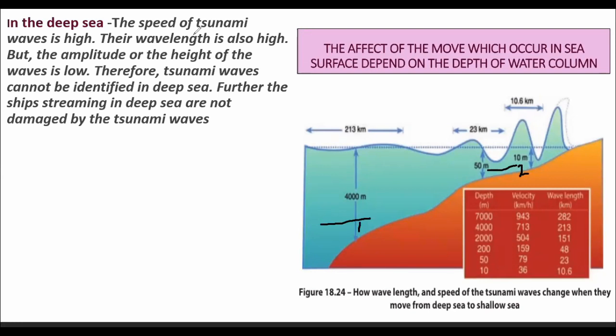In the deep sea, the speed of tsunami waves is high; therefore, the wavelength is also high — the distance between one crest to another is long. But the amplitude, or height of the wave, is low. Therefore, tsunami waves cannot be identified in deep sea, and ships sailing in deep sea are not damaged by tsunami waves.